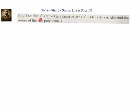We know x squared plus 2x plus k is a factor of this. That means when we do long division, we should get the remainder as 0. So we will equate the remainder to 0 and find out the value of k. Then substituting in the quotient, we should be able to find out all the zeros of the polynomials. So let us go ahead and do the long division.